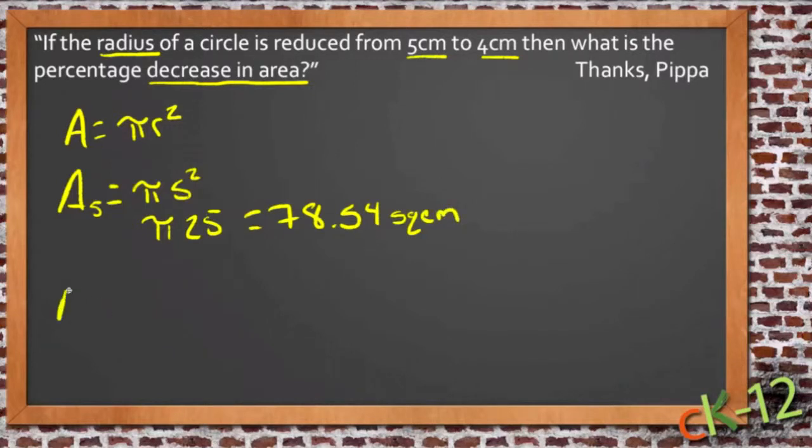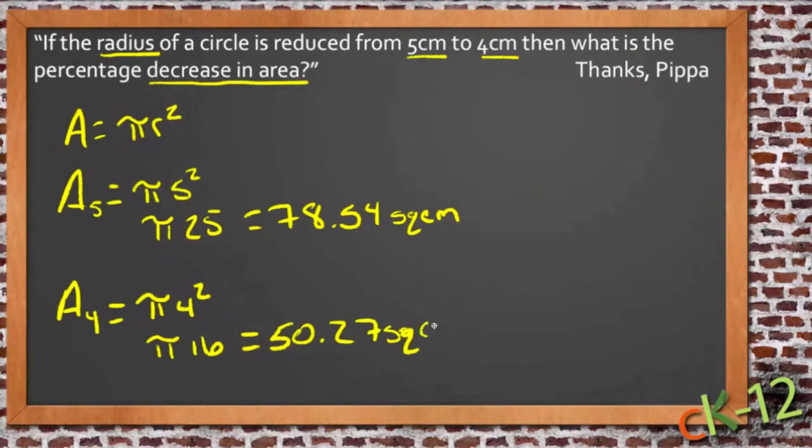And then for the area of the other circle, the area of the 4 centimeter circle, we get pi times 4 squared, so we get pi times 16, and that, 16 times pi, is 50.27 square centimeters. So we go from about 78 and a half centimeters down to 50 and a quarter centimeters when we reduce the radius from 5 to 4.